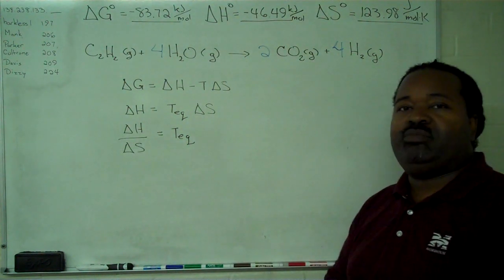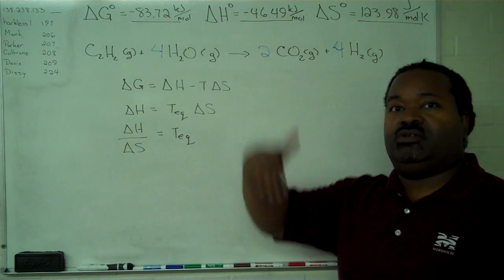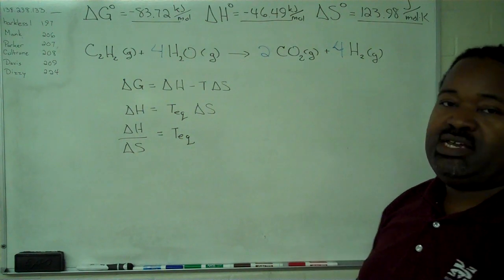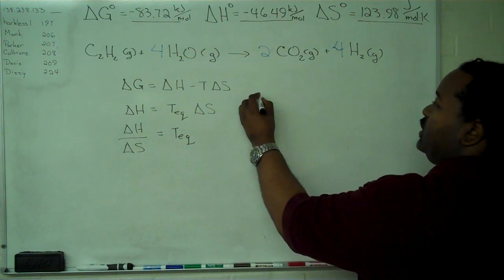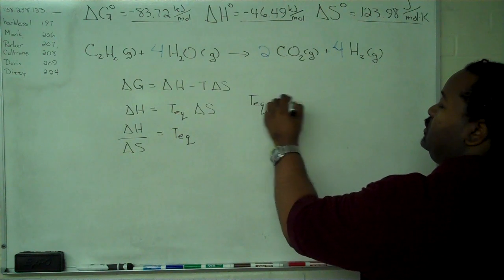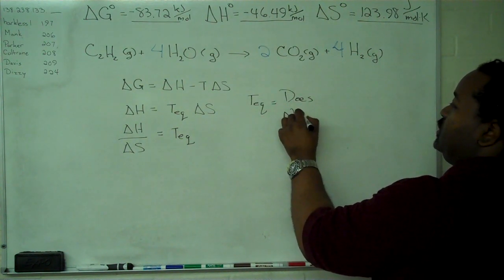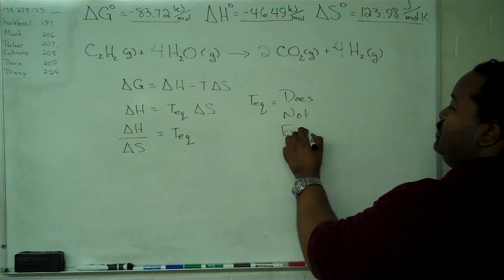But temperatures have to be positive. We start at absolute zero and go up. Delta H has a negative sign. Delta S has a positive sign. So in this case, there is no equilibrium temperature. Does not exist.